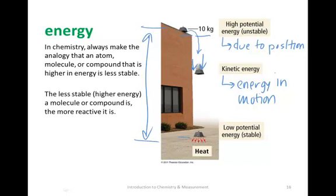When the weight strikes the ground, any excess potential energy that hasn't been transferred to kinetic energy can also be transferred via heat, which is the transfer of kinetic energy at the microscopic or molecular level — heat is kinetic energy of molecules. This is a good example of typical energy transfer progression. We'll see this often: systems going from high potential energy to low potential energy. High potential energy means an unstable position; lower potential energy means more stable.